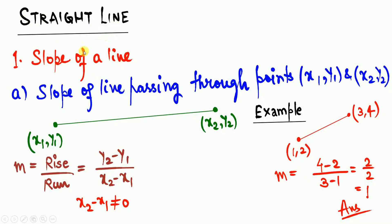In straight line, the first thing we need to learn is the slope of a line. Finding the slope of a line plays a very important role in engineering calculations. The slope can be given in different formats. The first format is the slope of a line given through two points (x1, y1) and (x2, y2). When you connect these two points you get a straight line, and slope m equals rise upon run — that is, change in y values divided by change in x values: (y2 - y1) / (x2 - x1).